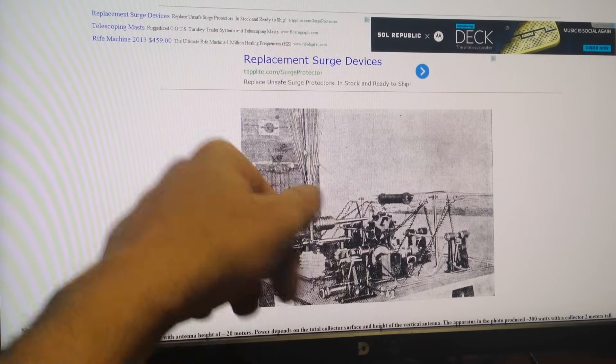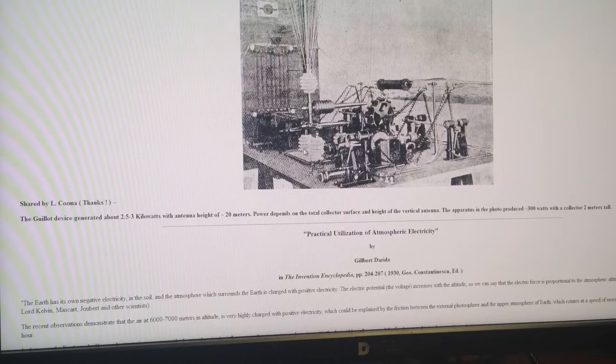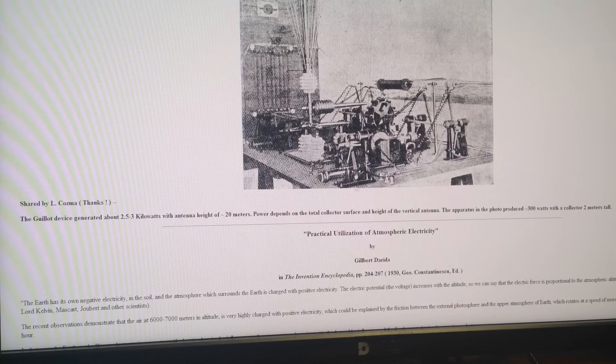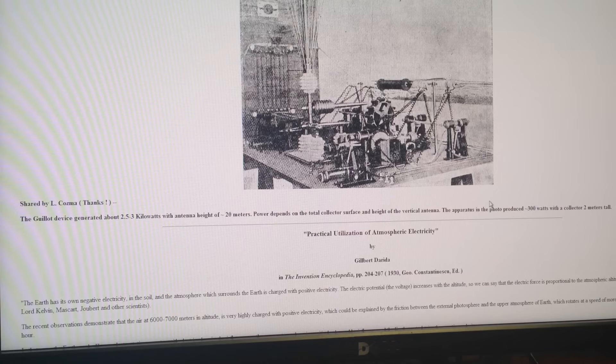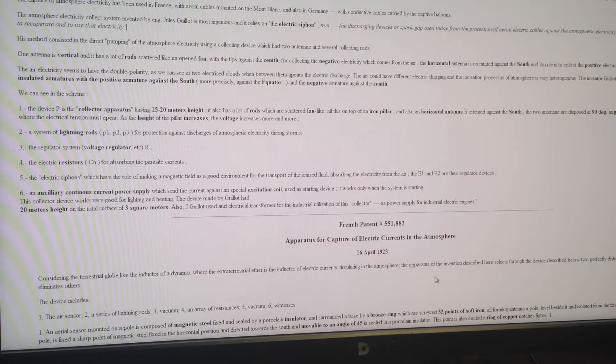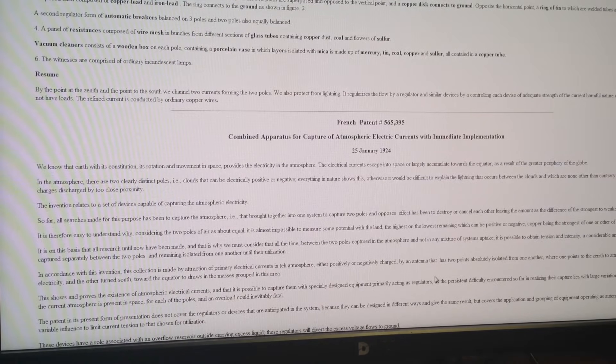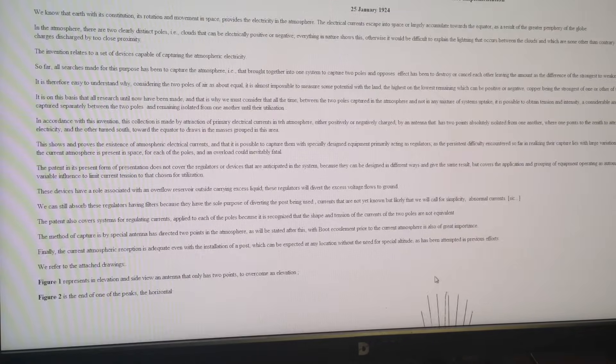There's also this, and you can see here on the antenna that this is a bunch of thin wire spikes, and it's probably to help the corona discharge. This one says the apparatus in the photo produced 300 watts with a collector two meters tall. So a lot of times folks, it's good to go back, look at what's been done before, and replicate that stuff. Because if I could get 300 watts with a two meter tall antenna, that would just be phenomenal. And whether or not I get there, it's a lot of fun experimenting and learning.